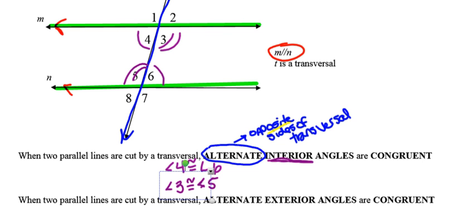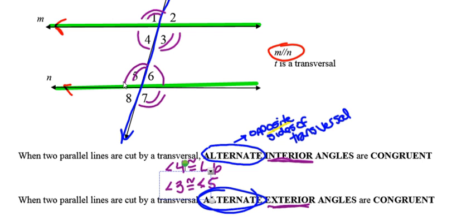The next special thing that happens is that whenever two parallel lines are cut by a transversal, alternate exterior angles are congruent. That word alternate still refers to opposite sides of the transversal, but now we're talking exterior — like exterior paint from Home Depot, it's for the outside. So alternate exterior angles are on opposite sides of the transversal and outside of the parallel lines. Angles one and seven are alternate exterior angles, as are angles three and one which are vertical and therefore congruent.